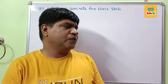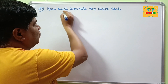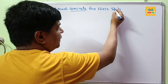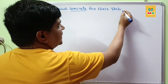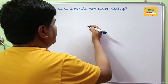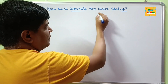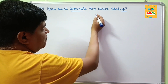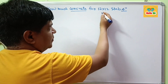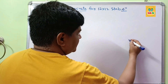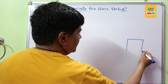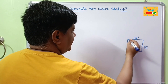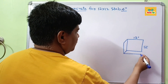Hi guys, today in this video we will talk about how many concrete bags do I need for a 12x12 concrete slab at 4 inch thickness. We need to calculate the required amount of concrete in cubic feet, cubic yards, or concrete bags for this slab at 4 inch thickness. Suppose you have a slab that is 12 feet by 12 feet and the thickness will be 4 inches.